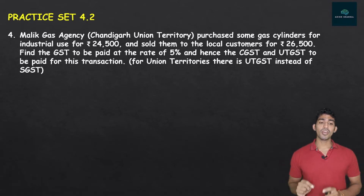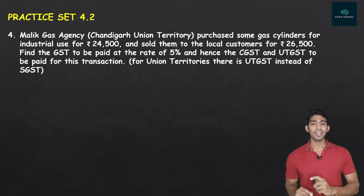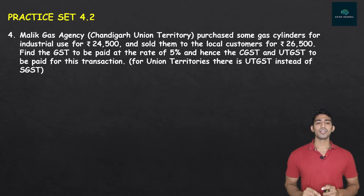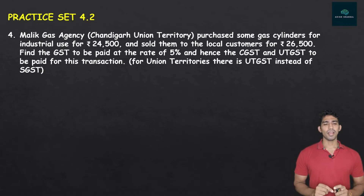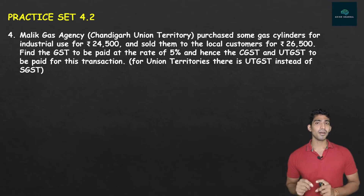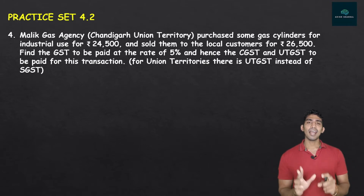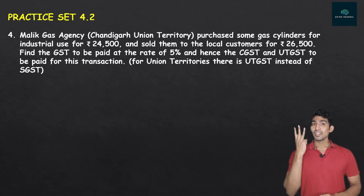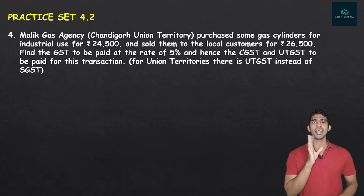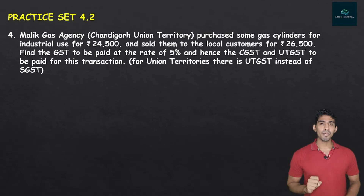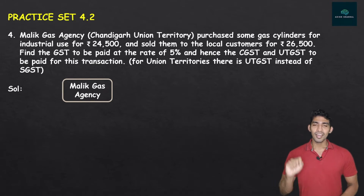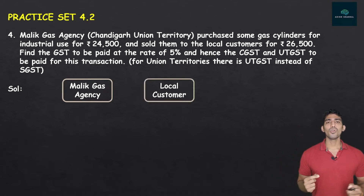Malik Gas Agency, Chandigarh Union Territory, purchased some gas cylinders for industrial use for Rs. 24,500. In this question, unlike the previous one, there are only two entities: Malik Gas Agency and a local customer. Malik Gas Agency purchased and then directly sold to the customer. Let's build the flow chart for these two.